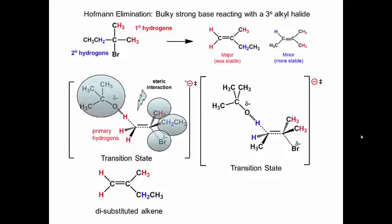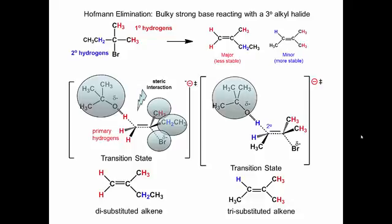Now look at the transition state that produces the more stable alkene. In this transition state, the bulky base is trying to reach the secondary hydrogens. There is now steric interaction between the groups on the adjacent tertiary carbon plus the adjacent primary carbon. There is greater steric interaction in this transition state, which makes it less stable.